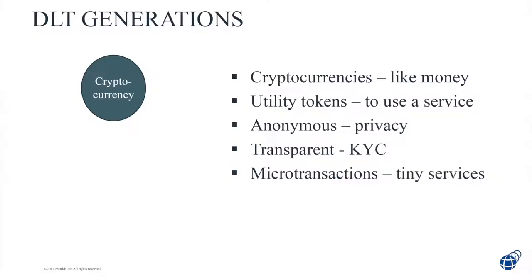What does the first generation let us do? It lets us use cryptocurrencies like money — save some in your wallet as a store of value, use it to transfer money to other people, just like PayPal but with cryptocurrency. You can use utility tokens to pay for services online. Economists endlessly debate whether cryptocurrency is money, equity, stock, or a utility token — and the answer is it's sort of all of those mushed together and also none of the above. It's this new thing called a cryptocurrency.